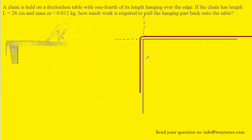If you haven't done so yet, make sure that you pause the video and try to answer the question on your own first before listening on. We have redrawn the picture in order to evaluate it more thoroughly. What we're going to do is call the corner of the tabletop the origin. Up here the height would be zero — we can mark that as y equals zero. One-fourth of the entire length of this rope is hanging over the edge of the table, so from here all the way down we have a length of one-fourth L.